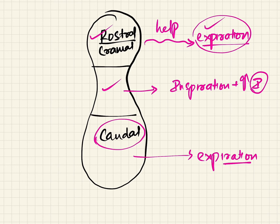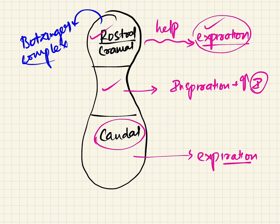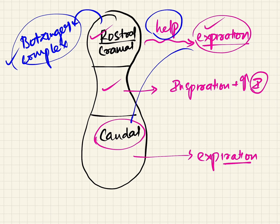Finally, the rostral part is given the important name 'Bötzinger complex.' The Bötzinger complex helps in expiration, which is actually performed by the caudal region. That completes the overview of the ventral respiratory group.